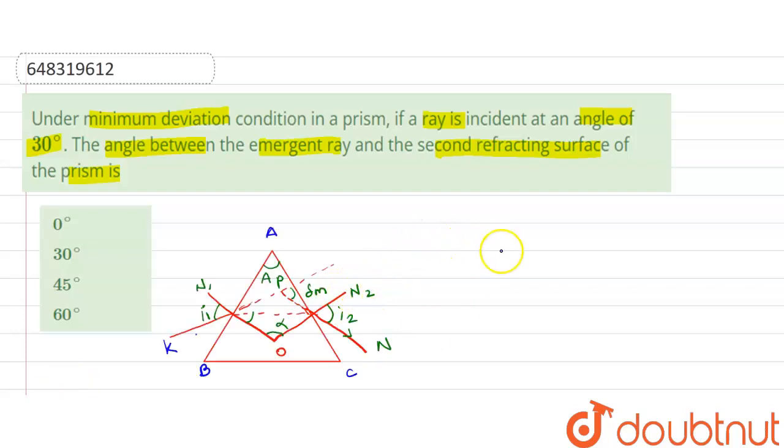We know that minimum deviation occurs when I1 is equal to I2. I1 is equal to I2.